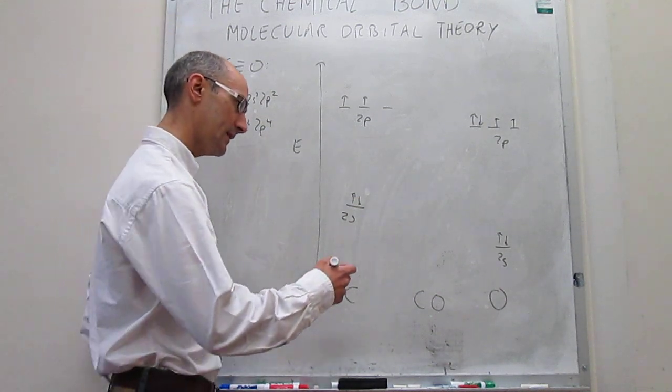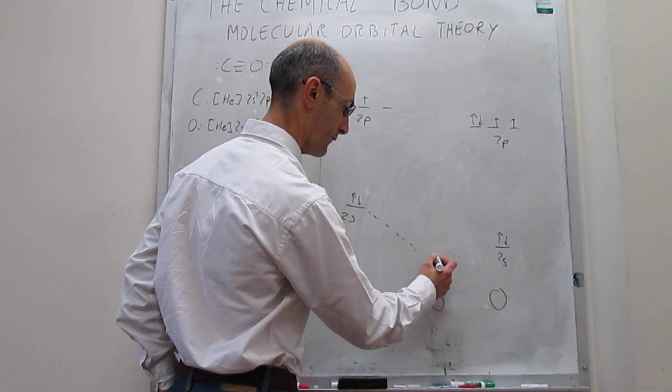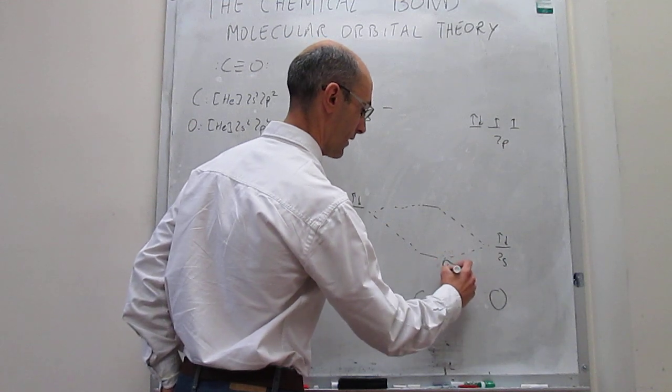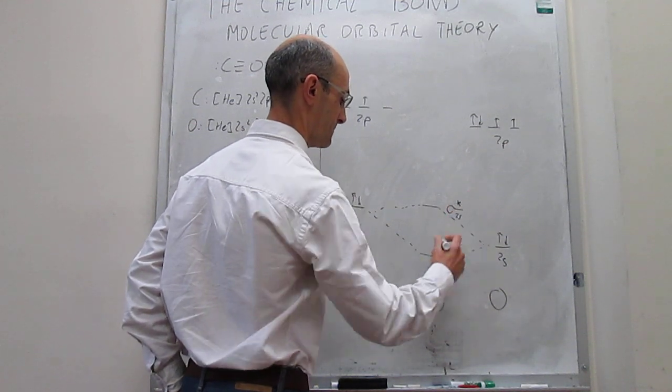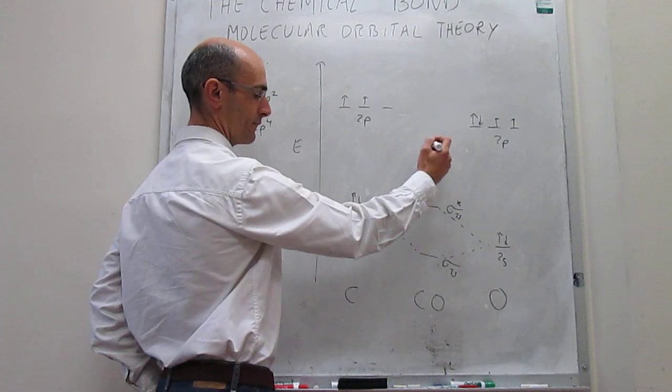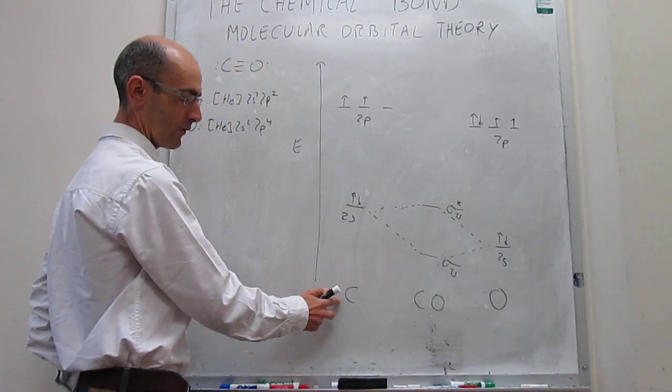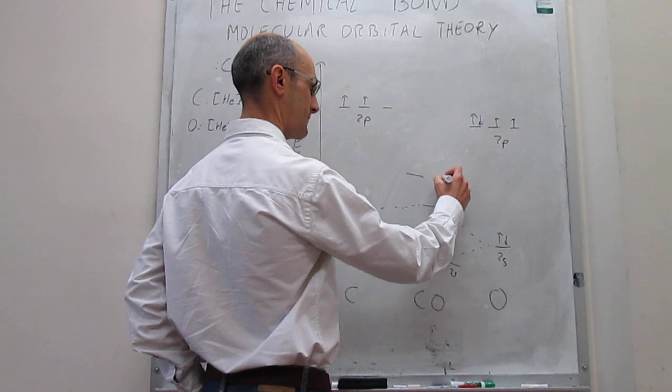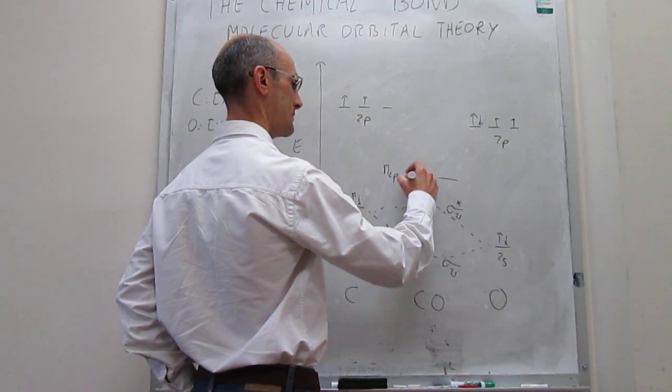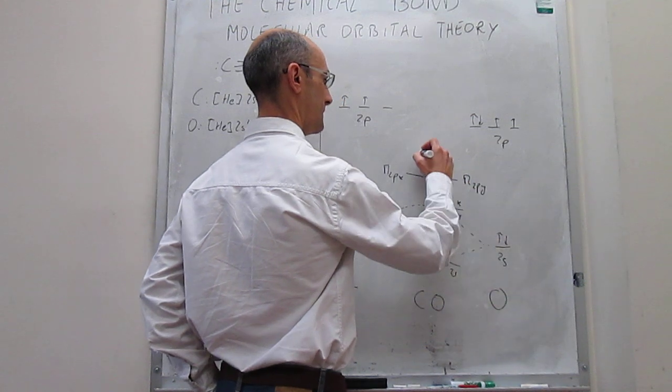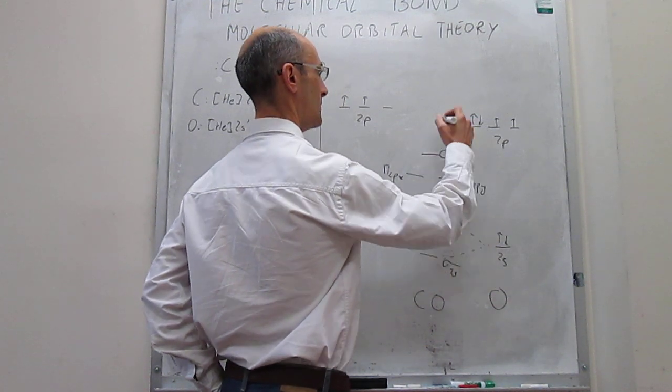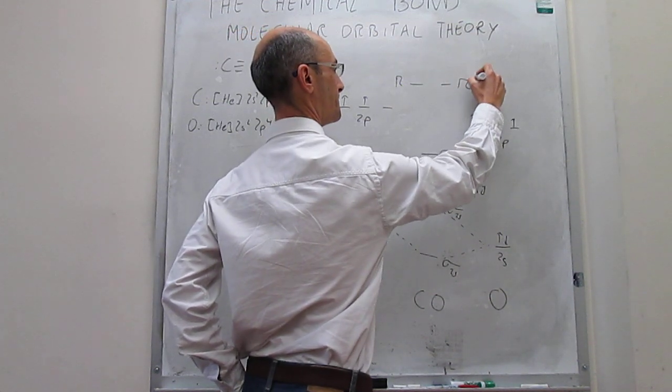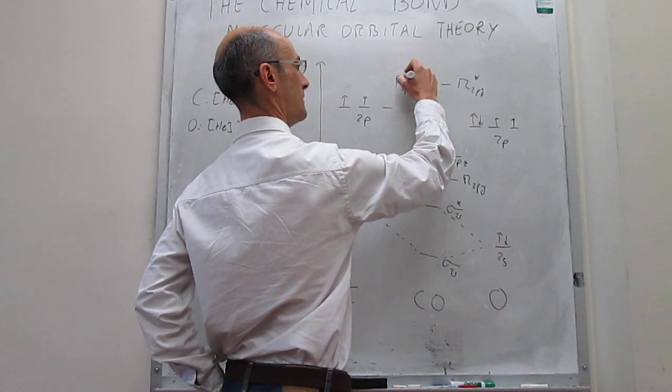When we draw this, for the sigma 2s bonding and anti-bonding, that doesn't matter. You have sigma 2s, sigma 2s anti-bonding. But here's where the difference between the carbon and the oxygen series would be, and we know that for CO, the molecule follows the carbon ordering. So first you have the pi bondings, pi 2px, pi 2py, then the sigma 2pz bonding, and then you will have the anti-bondings. First the pi's, 2px, 2py, and then the sigma 2pz.